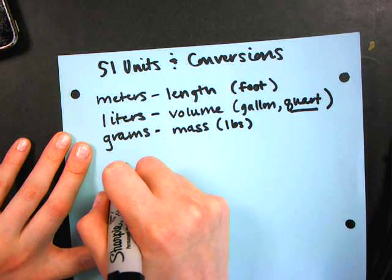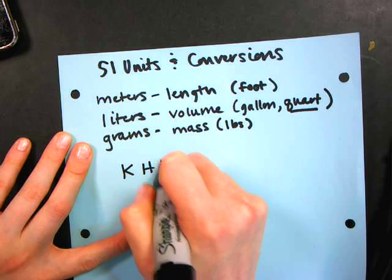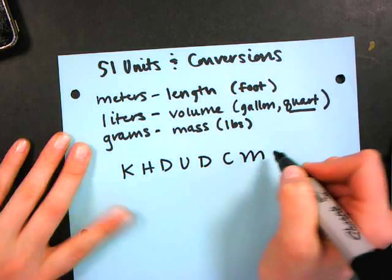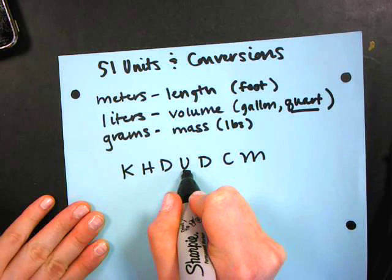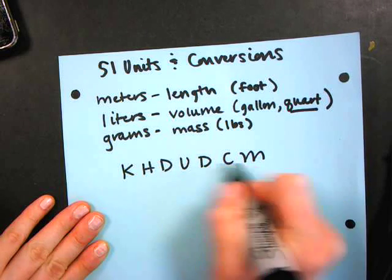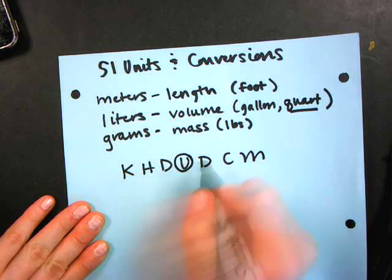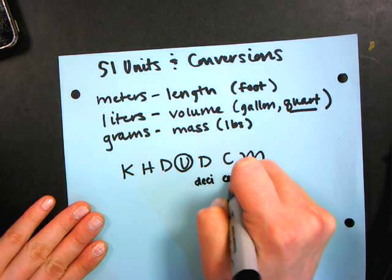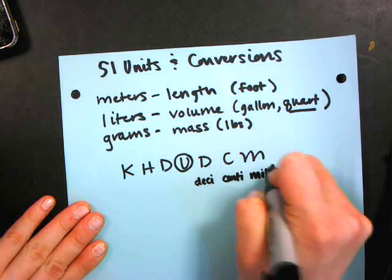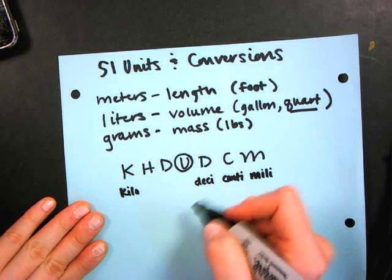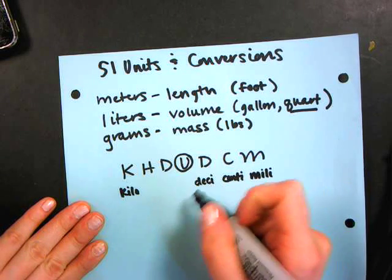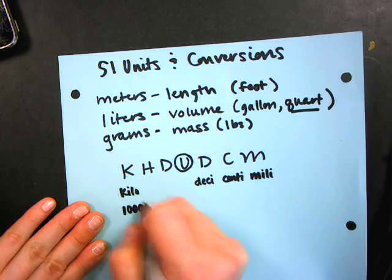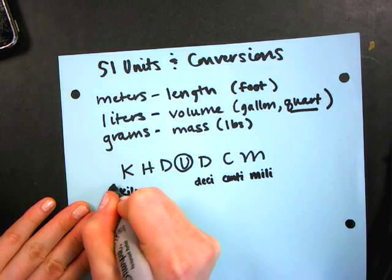And they have these prefixes. So I've heard a bunch of you saying King Henry died, this is like base, so like drinking chocolate milk. So that's good. That's a good way to remember it. And we know that this is going to be desi, centi, milli, and this is going to be kilo. So those are the only ones that I want you guys to memorize, because these are the ones that we're going to use the most. And this is your base. So kilo is a thousand times more. So a thousand times more than my base is going to be a kilo.